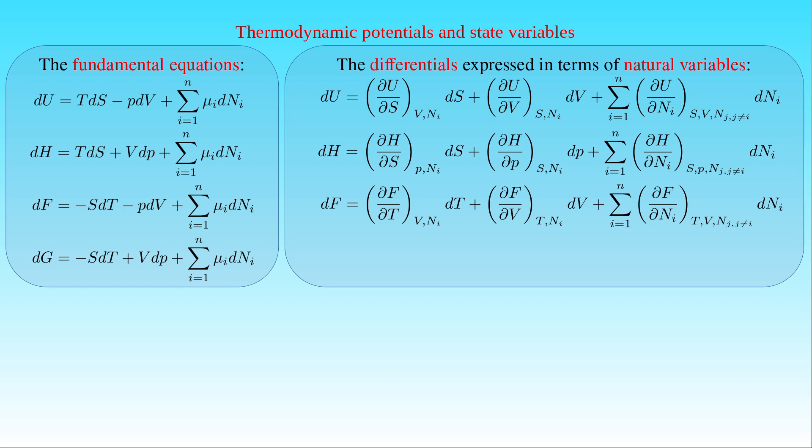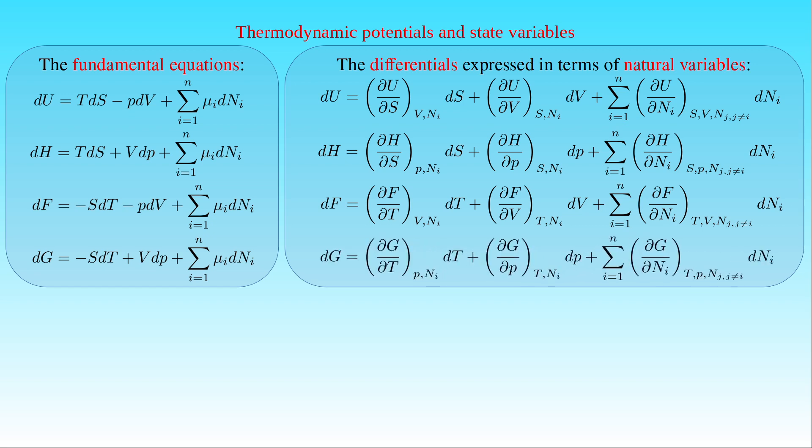Finally, it follows from the fourth fundamental equation that the natural variables of the free enthalpy G are the temperature T, the pressure P, and the number of particles Nᵢ. The differential of G is given by the partial derivative of G with respect to T at constant P and Nᵢ times dT, plus the partial derivative of G with respect to P at constant T and Nᵢ times dP, plus the sum of the partial derivative of G with respect to Nᵢ at constant T, P, and Nⱼ where j ≠ i, times dNᵢ.